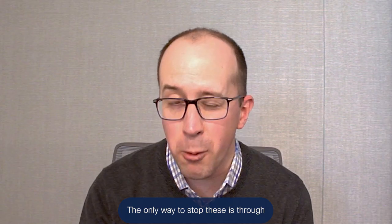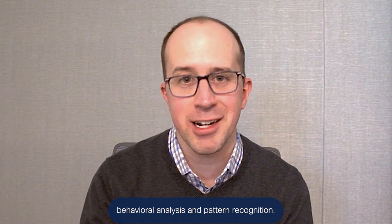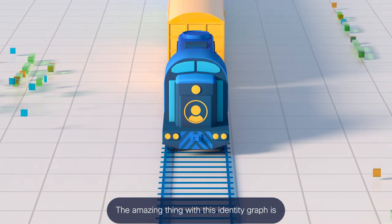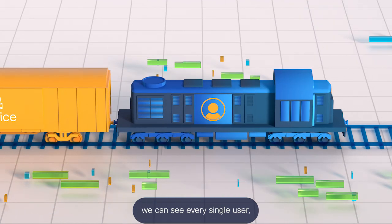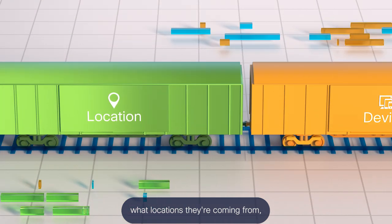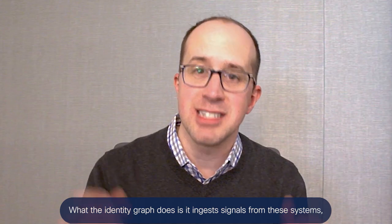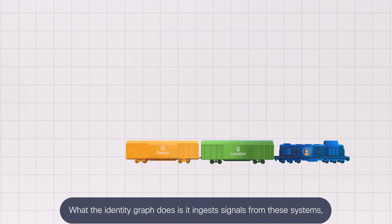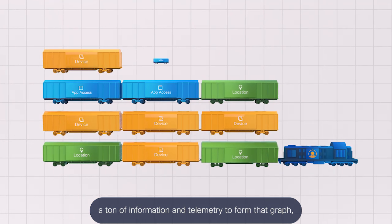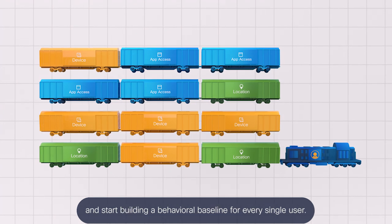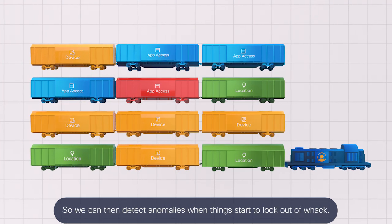The only way to stop these is through behavioral analysis and pattern recognition. The amazing thing with this identity graph is we can see every single user — what devices they're using, what locations they're coming from, and what applications they're accessing. The identity graph ingests signals from these systems, a ton of information and telemetry, to form that graph and start building a behavioral baseline for every single user, so we can then detect anomalies when things start to look out of whack.